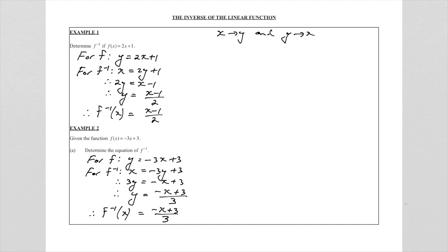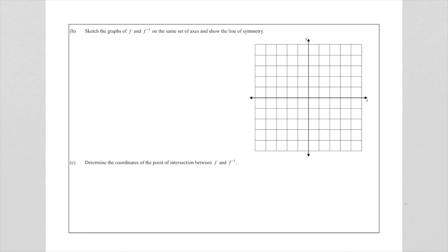Now let's look at part b of this question. They ask us to sketch the graphs of f and the inverse of f on the same set of axes and show the line of symmetry. We will discuss the line of symmetry as well. We're going to look at the straight line graph y = −3x + 3 and calculate the x and y intercepts.